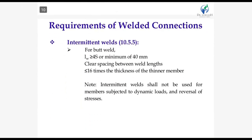Per clause 10.5.5, for butt weld, LW should be ≥ 4S or 40 mm, whichever is greater. Clear spacing between welds should be ≤ 16 times the thickness of the thinner member. Importantly, intermediate welds shall not be used for members subjected to dynamic loads or where reversal of stresses occurs, as these conditions are very dangerous for intermediate welds.